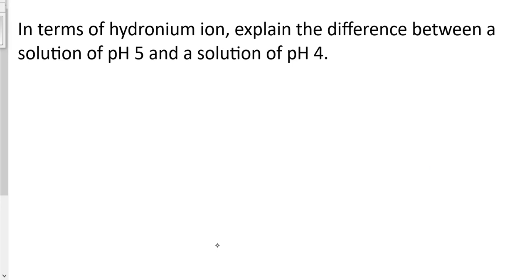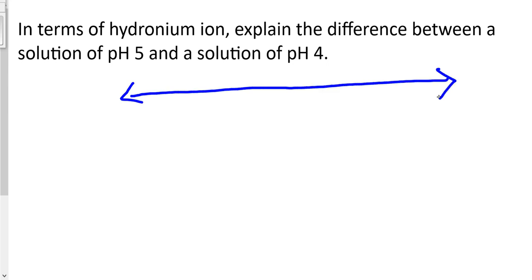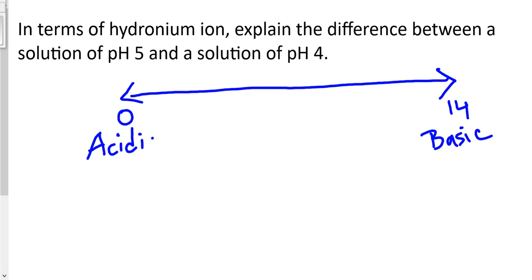Let's take a look at an example. In terms of hydronium ion, explain the difference between a solution of pH 5 and a solution of pH 4. Always think about a number line: here we have 0, and here we have 14. Anything close to 14 is a basic solution; anything close to 0 is an acidic solution. Seven is where we have a neutral solution.